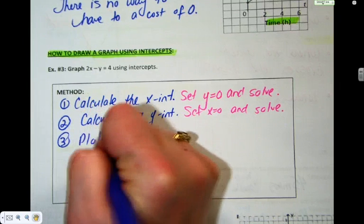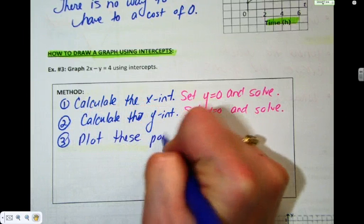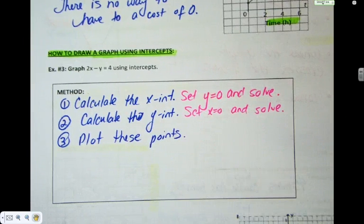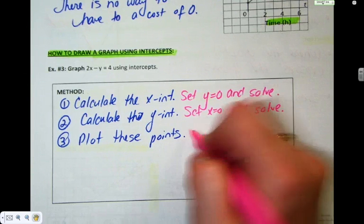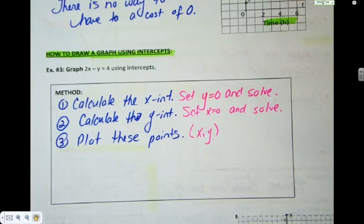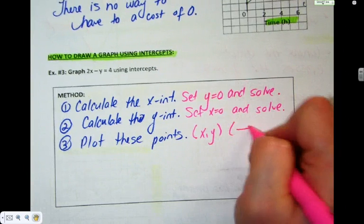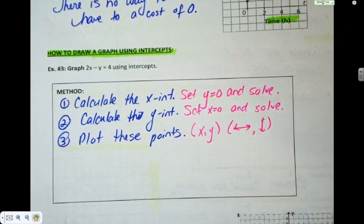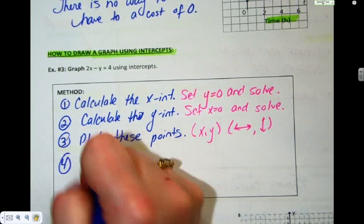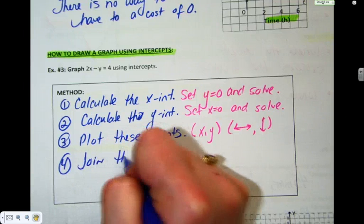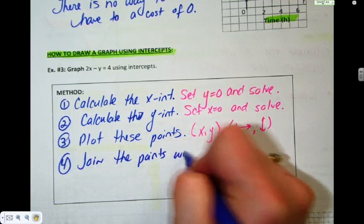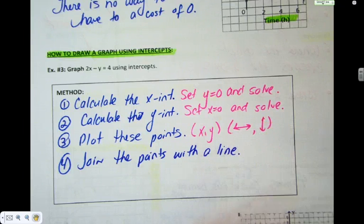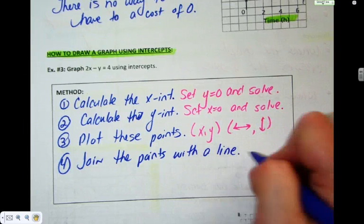Plot these points. And just a quick reminder from grade seven. When you have a coordinate point, the first one is x, the second one is y. X is your horizontal movement. So you're counting left or right. Y is your up and down movement. Join the points with a line. Put arrows at the end.